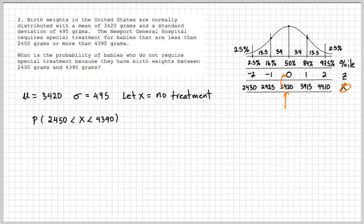Two standard deviations from the mean is 4410. But it's also connected to two z-scores, which is the same thing. So 2450 through 4390, this is the area that we're looking for right here. And so I can have an approximation.